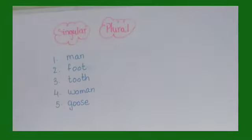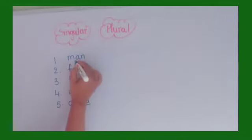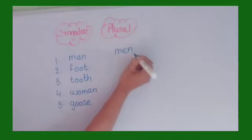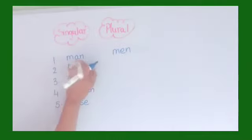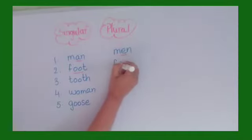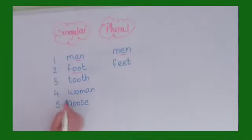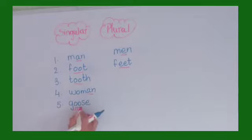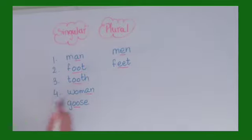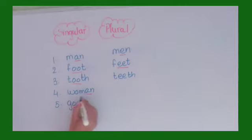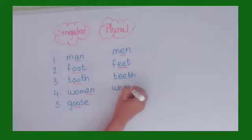For singular 'man', the plural is written as 'men' — the inside vowel is changed to E. For 'foot', the plural is 'feet'. For 'tooth', again there are two O vowels — these inside vowels are changed, so it becomes 'teeth'. Tooth — singular; teeth — plural. Woman becomes women. Goose becomes geese.